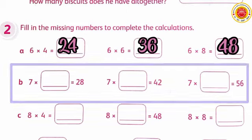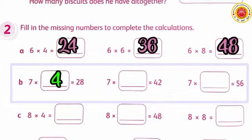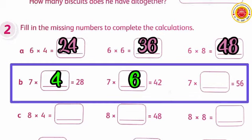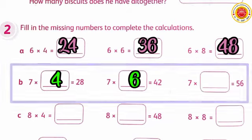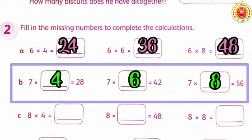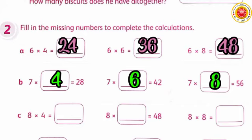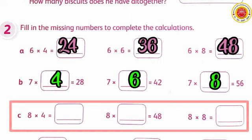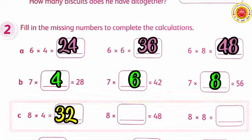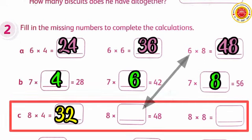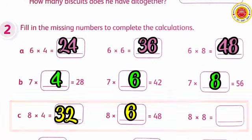Next, part B is a little harder. 7 times what equals 28? Then: 7 times what equals 42? And: 7 times what equals 56? These kinds of problems can actually be solved using division. But if your multiplication isn't fluent yet, you must memorize your times tables first so that when you learn division, it will be easier. Part C: 8 times 4 equals 32. Then: 8 times what equals 48? The answer is 6 — 8 times 6 equals 48.